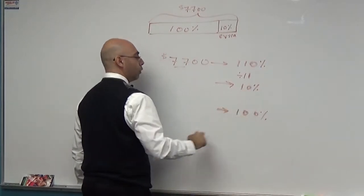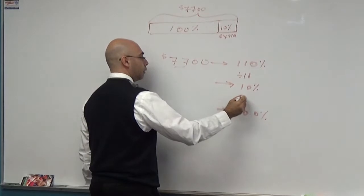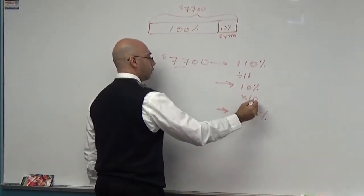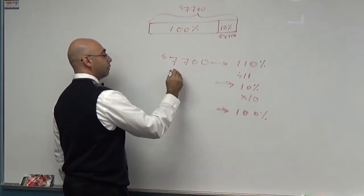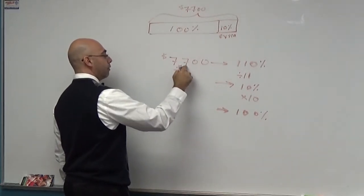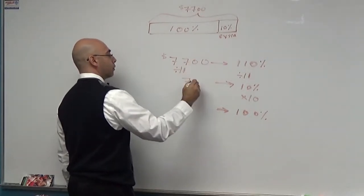11 divided by 11 is 10. How do you turn 10 into 100? Times it by what? Times it by 10. Multiply by 10. You do the same thing on this side. 77 divided by 11 is 7 with two zeros after it.